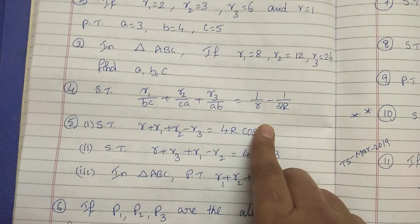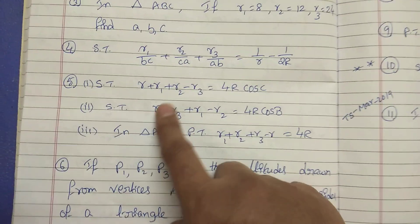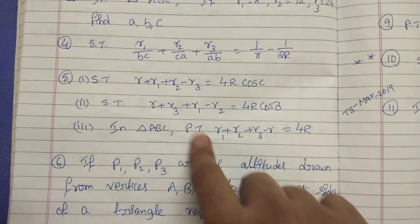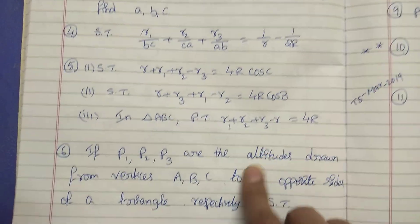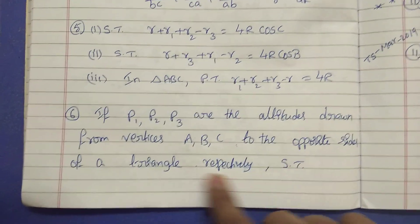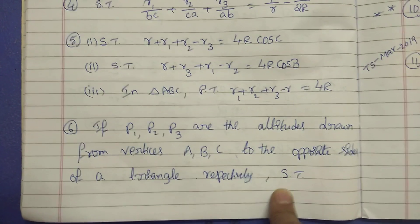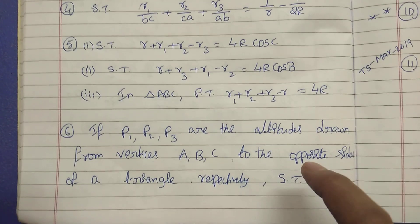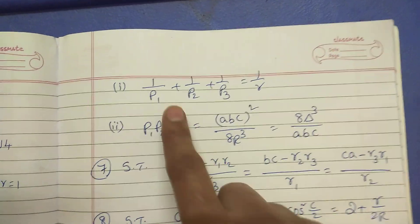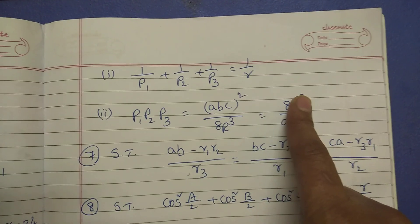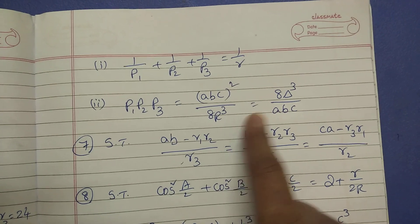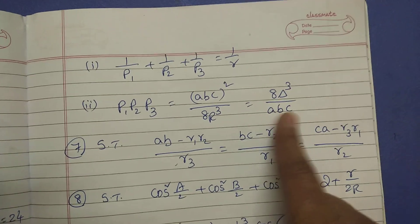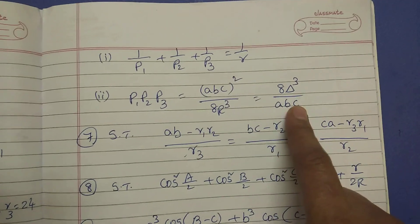Then we do it. Next, I will show you how the video is done. Cos B: altitudes are drawn on opposite sides respectively. Then 1 by b1 plus 1 by b2 plus 1 by b3 equals 1 by r. And ABC whole squared by 8r³ equals 8 delta cubed by abc.